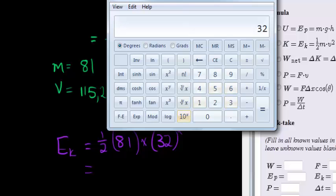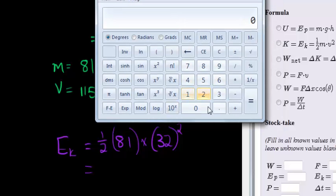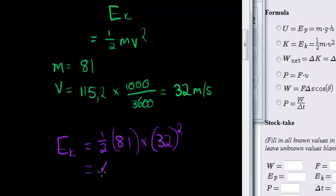So typing that in, we have 0.5 times 81 times 32 squared. And we get 41,472. 41,472. Remember what energy is measured in? It's measured in joules.